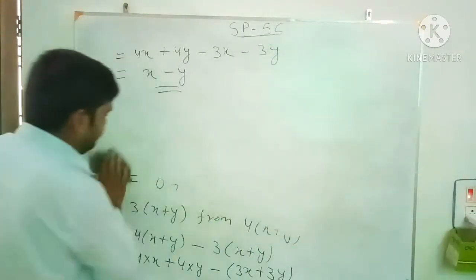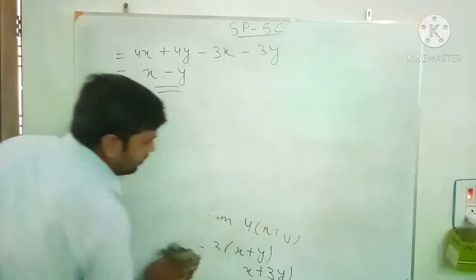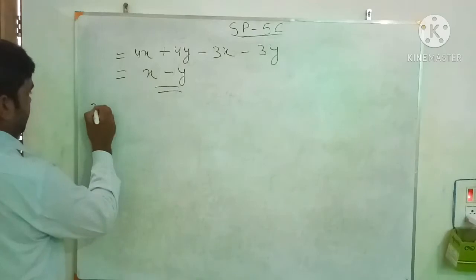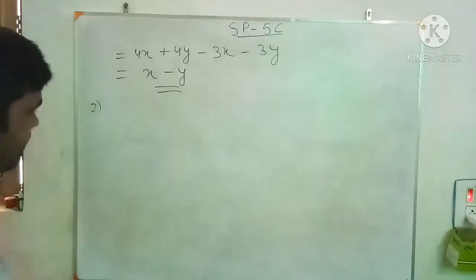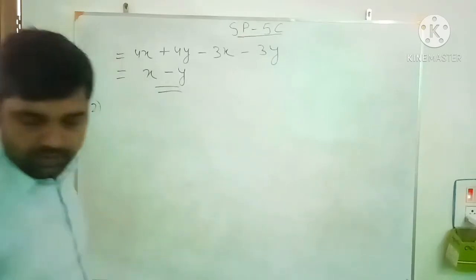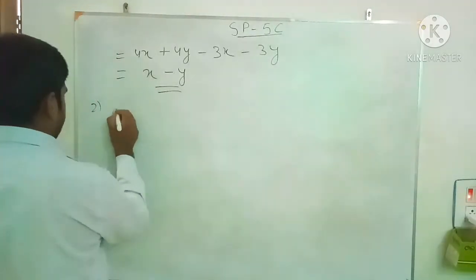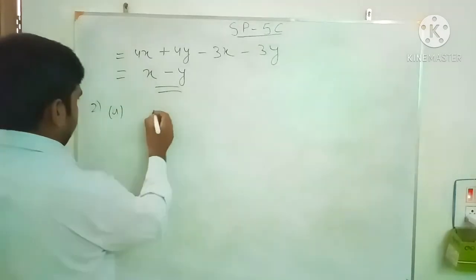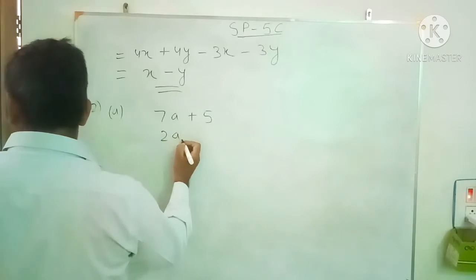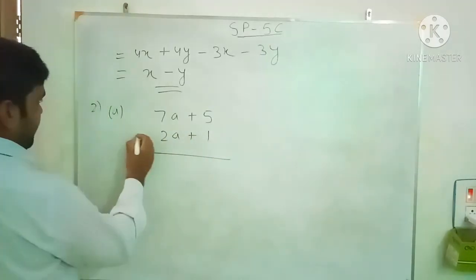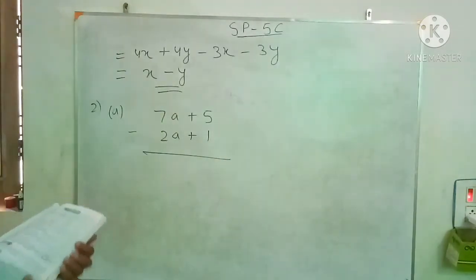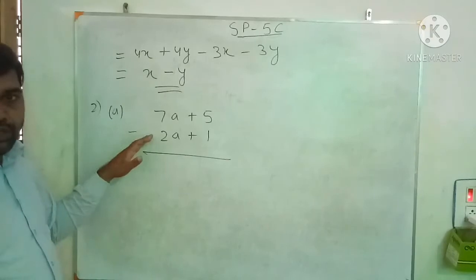Now move to question number 2. Question 2a: subtract the lower expression from the upper expression. Upper expression is 7a plus 5, lower expression is 2a plus 1. We have to subtract the lower expression, so we change the sign of each term in the lower expression.